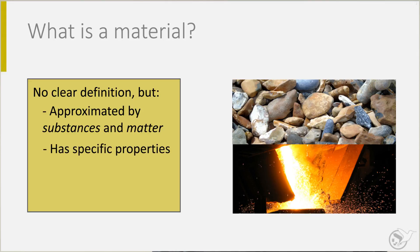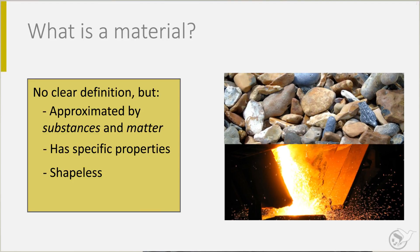Key is that a material has specific properties, but not a specific shape. If you mention wood, aluminum or iron, you think about a certain substance, not about a particular shape. On the slide, you see pebbles having certain shapes, although not specific. The molten metal in the lower picture definitely doesn't have a shape, as it flows like a liquid.